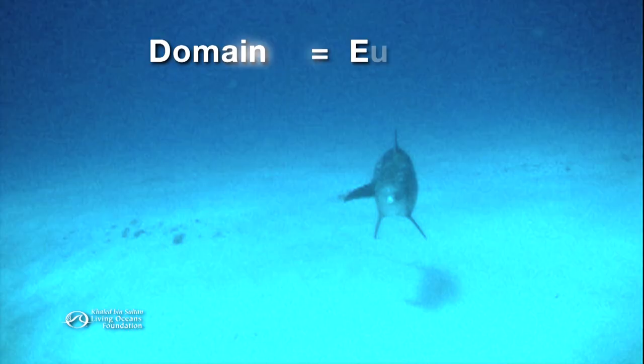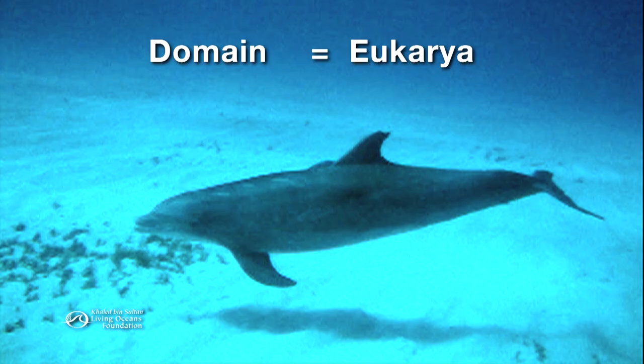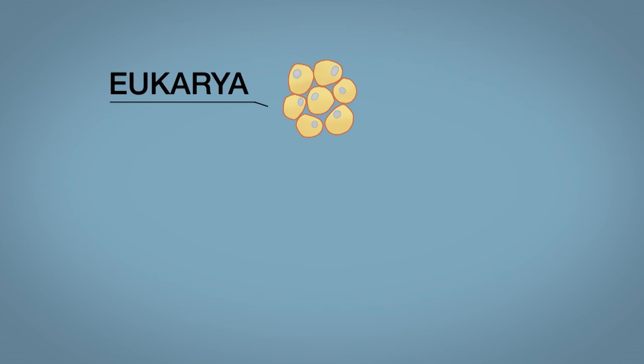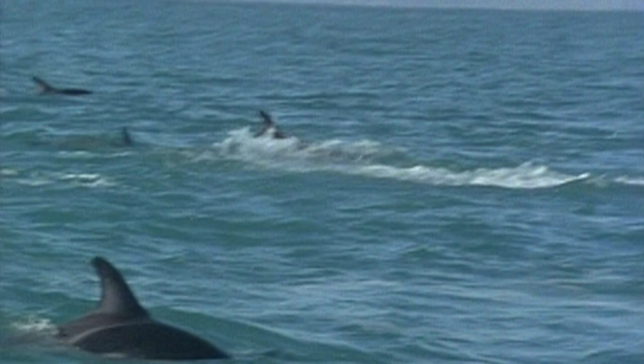The next category is called kingdom. The kingdoms include plants, animals, fungi, and more. Obviously, this playful creature has the physical characteristics of an animal, so its kingdom is animalia.